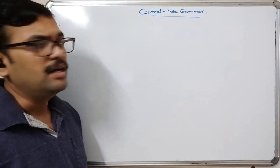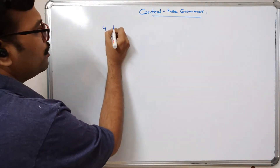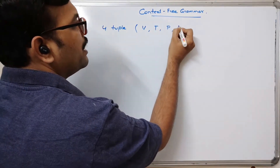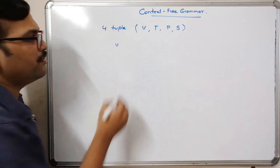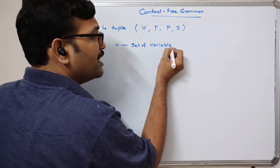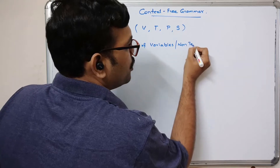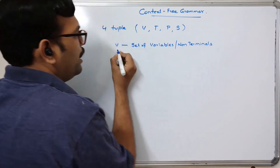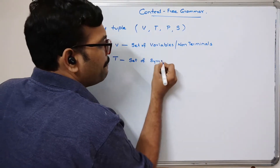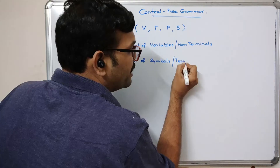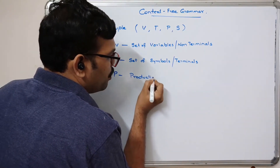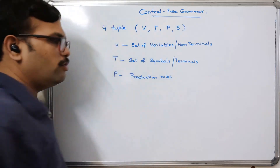Context free grammar is also a four-tuple or quadruple, with V, T, P, and S. V means set of variables, also called non-terminals. T is set of symbols, also called terminals. P is the set of production rules, and we need to take care about these production rules.